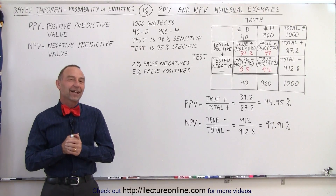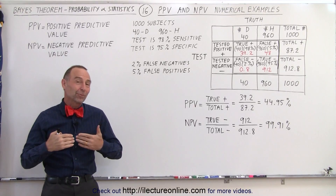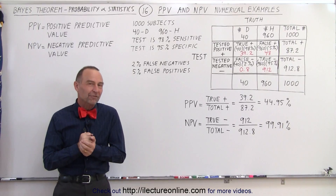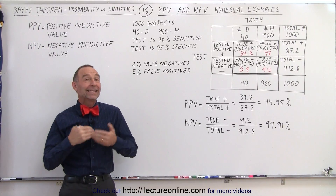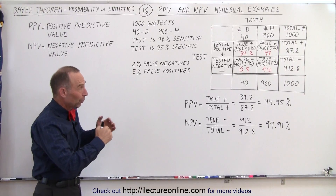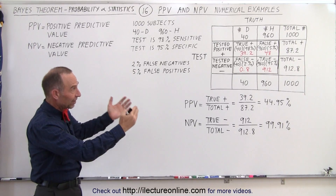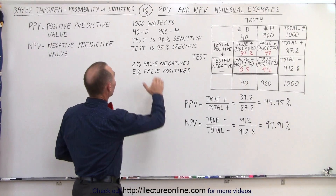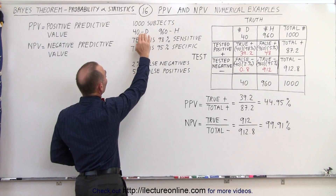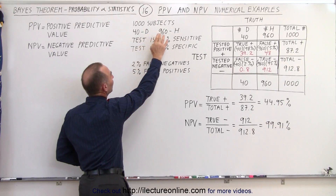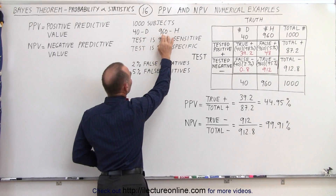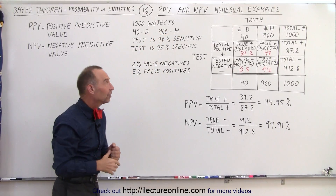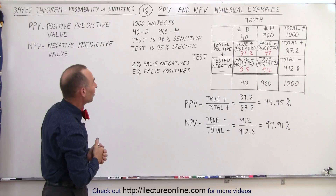Welcome to Electronline. Now let's take a look at some numerical examples of the positive predicted value and the negative predicted value. We're going to utilize the table format. Notice that we have a total of a thousand subjects — 40 that have the disease and 960 that are healthy, so 4% have the disease that we're testing for.